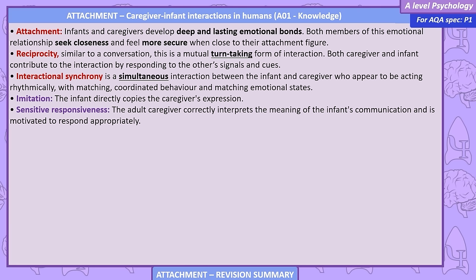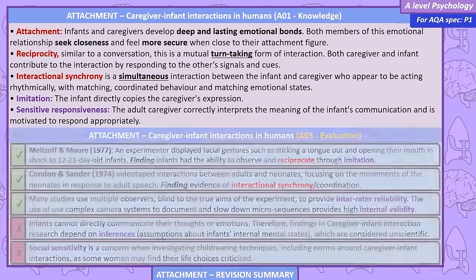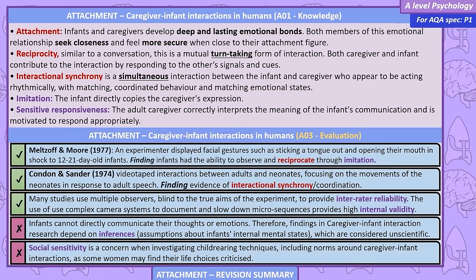Interactional synchrony is a simultaneous interaction between the infant and caregiver, who appear to be acting rhythmically, with matching coordinated behaviour and matching emotional states. Imitation: the infant directly copies the caregiver's expression. Sensitive responsiveness: the adult caregiver correctly interprets the meaning of the infant's communication and is motivated to respond appropriately. Meltzoff and Moore: an experimenter displayed facial gestures such as sticking a tongue out to 12 to 21 day old infants, finding infants had the ability to observe and reciprocate through imitation.